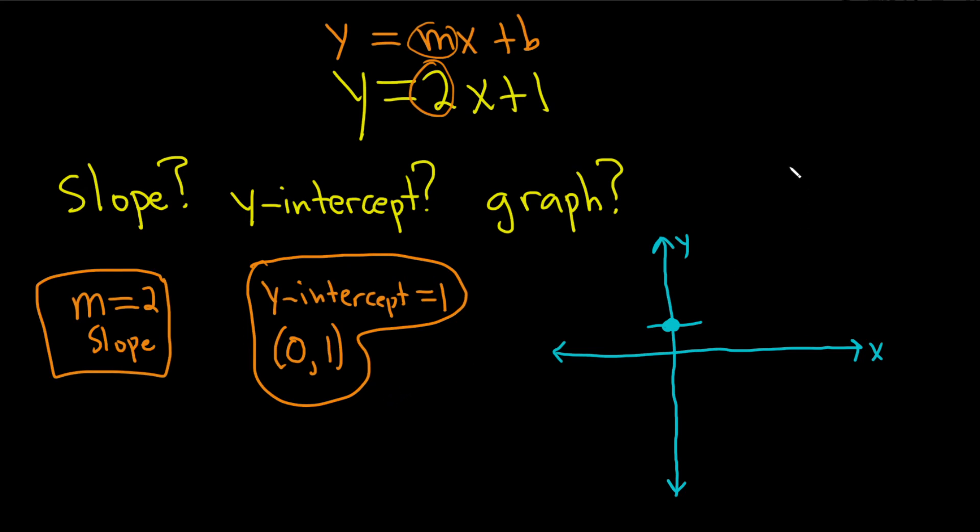So the way we're going to do it is we're going to think of the slope like this. m is equal to 2, which is 2 over 1. And remember, slope is rise over run. So we're going to use this to graph it.